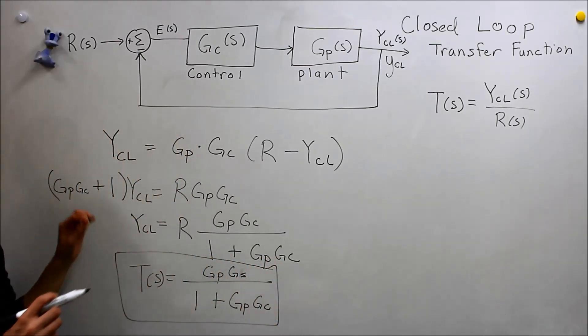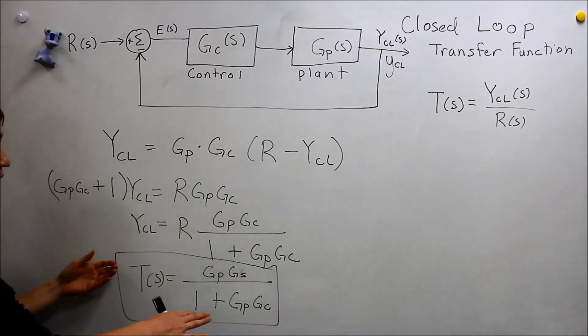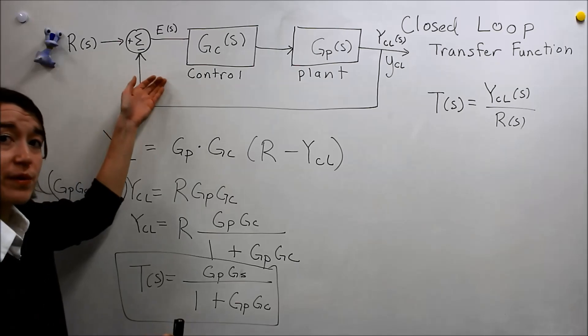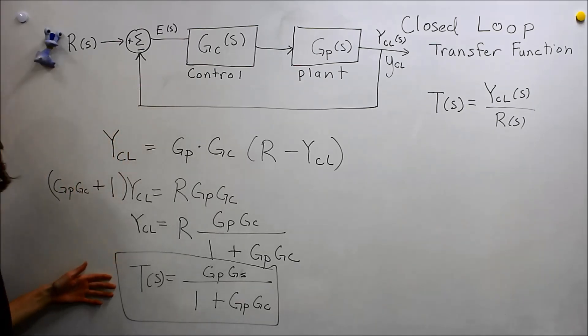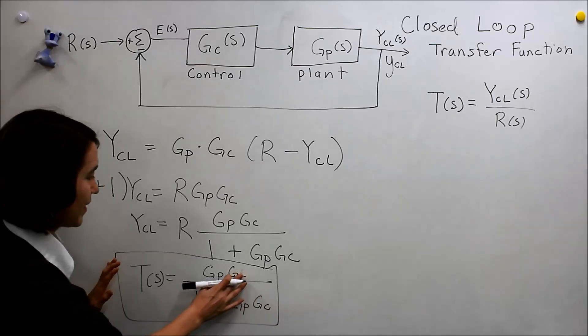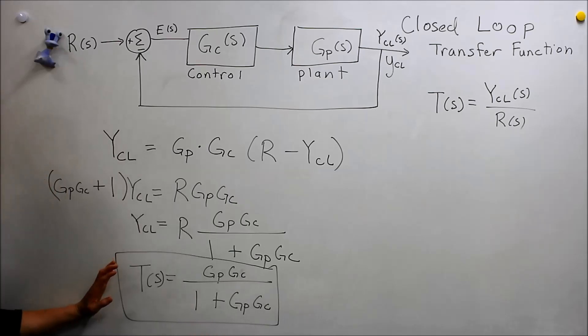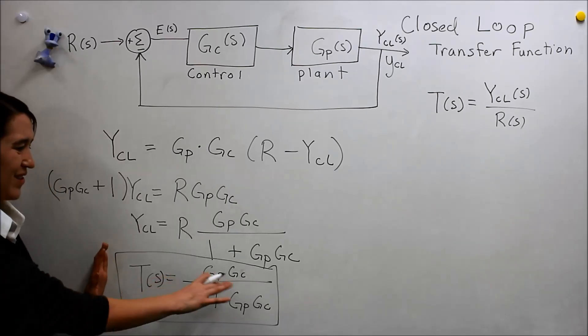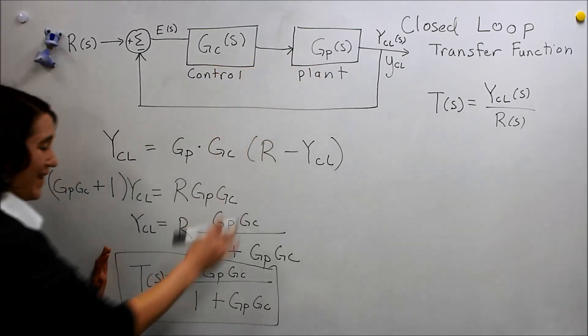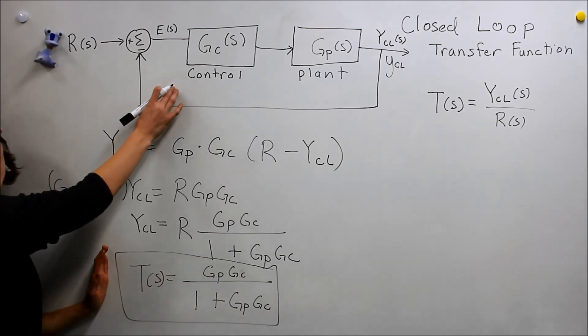If we want to analyze the stability or any other aspect of how this system operates, the closed-loop system operates, we use this transfer function to understand its stability and how it will react. So that's the derivation. This is important to know. This is the correct equation. It's these two multiplied together. And this is the transfer function for the closed-loop feedback system shown here.